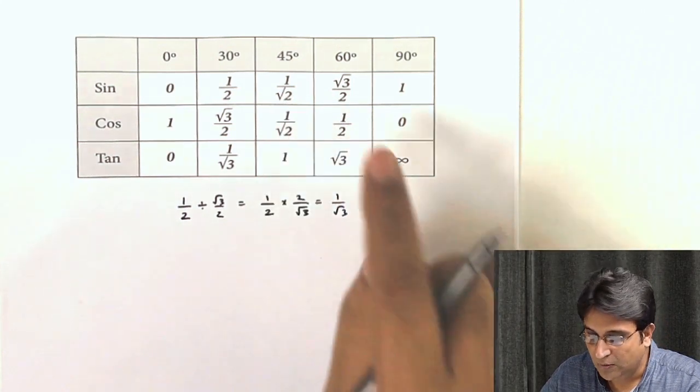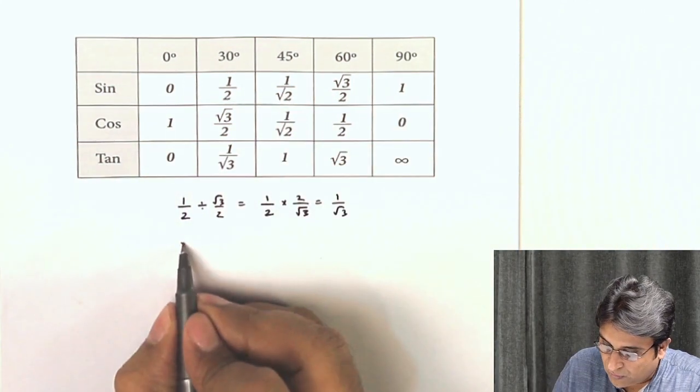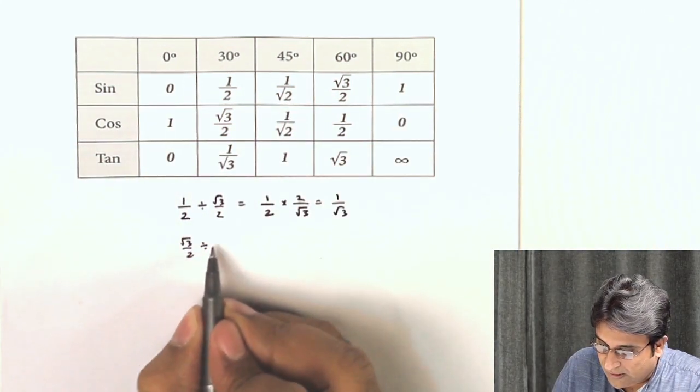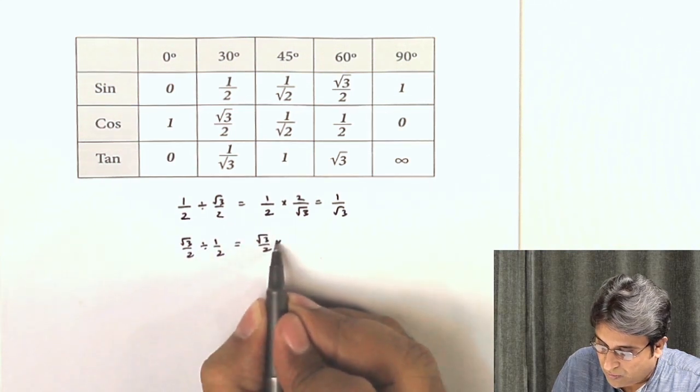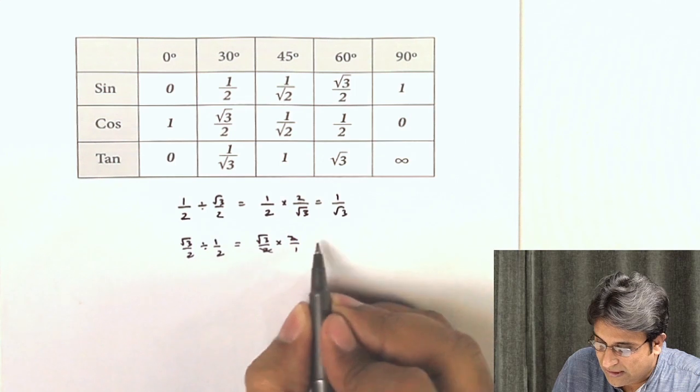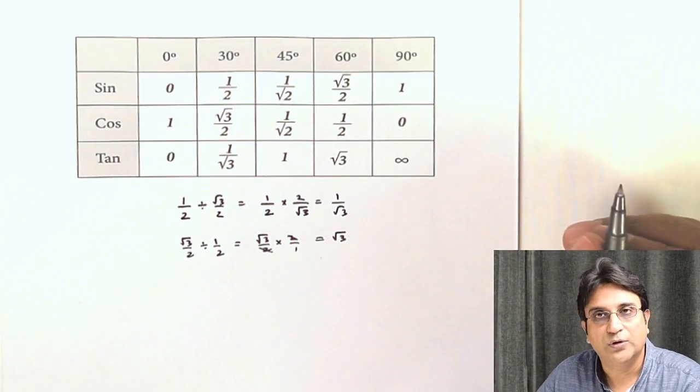Similarly, 1 by root 2 divided by 1 by root 2 will be 1 because both are equal. Then you have root 3 by 2 divided by half, so that will become root 3 by 2 times 2 by 1. So this will cancel, you will get root 3.